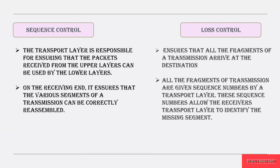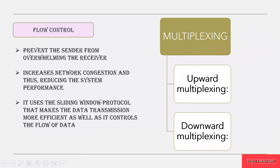Loss control ensures that all the fragments of the transmission arrive at the destination without any loss. All the fragments from the transport layer during transmission are given a sequence number. This sequence number allows the receiver to identify any missing data or missing segment in the transmission. Each packet is assigned a sequence number so that at the end, it is verified that all sequence numbers from the sender side are received, and any loss is identified.